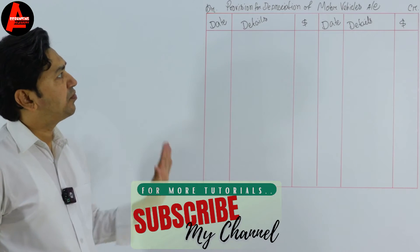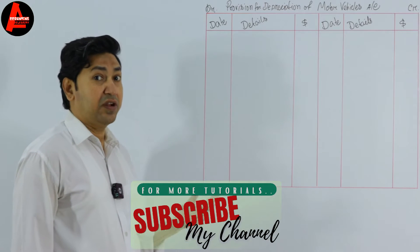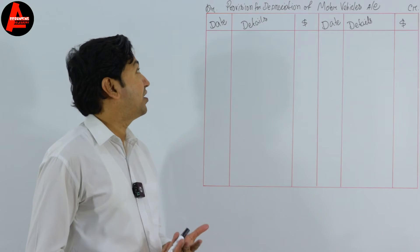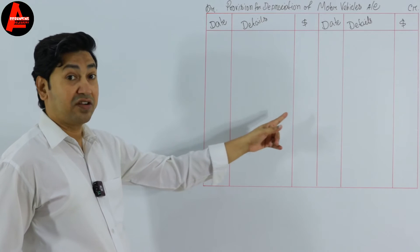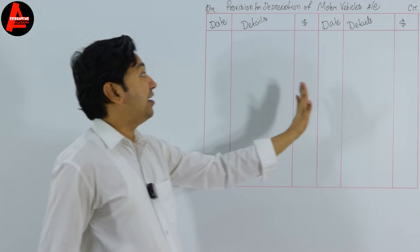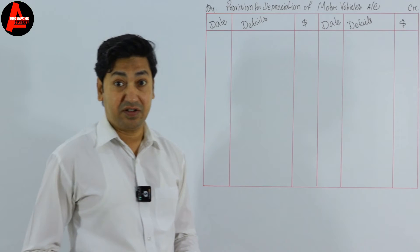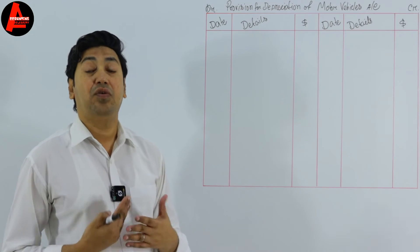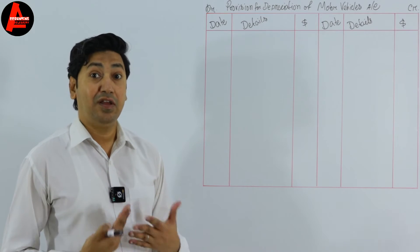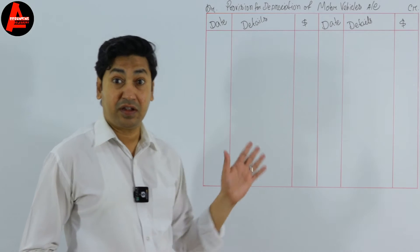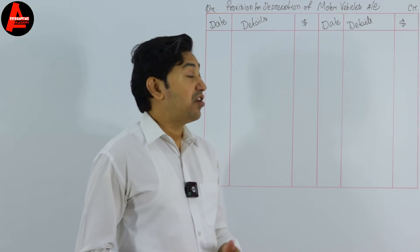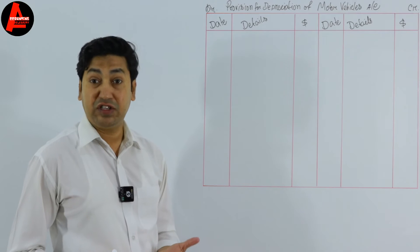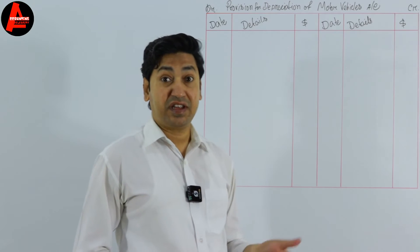In the provision for depreciation of motor vehicles account, everything related to depreciation will be included. The format has a date, detail, and dollar column on both the debit and credit side. This account has a credit balance, so the opening balance must be written on the credit side. On the question, we have the provision for depreciation balance on 1st January 2022.